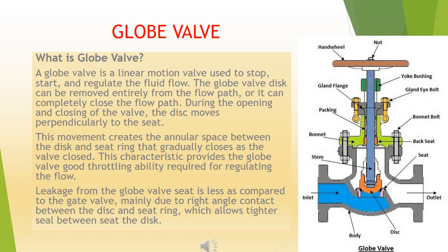This characteristic provides the globe valve good throttling ability required for regulating the flow. Leakage from the globe valve seat is less as compared to the gate valve, mainly due to right angle contact between the disc and seat ring, which allows a tighter seal between the seat and the disc.